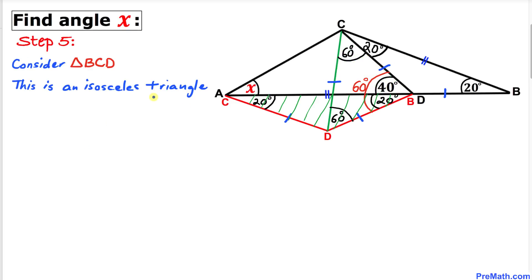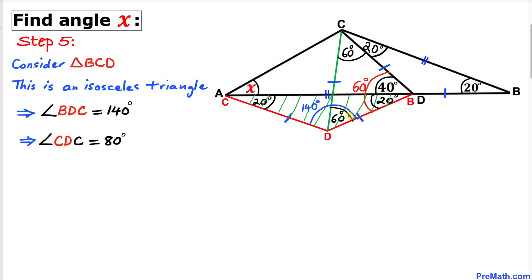Focusing on the red triangle BCD, the angle sum is 180 degrees. With angles of 20 degrees and 20 degrees, the third angle must be 140 degrees. Since the angle at that vertex is 140 degrees and one part is 60 degrees, the remaining angle CDC is 140 minus 60, which is 80 degrees.